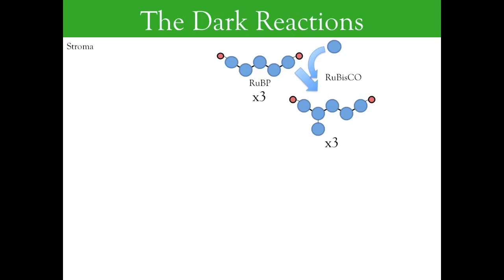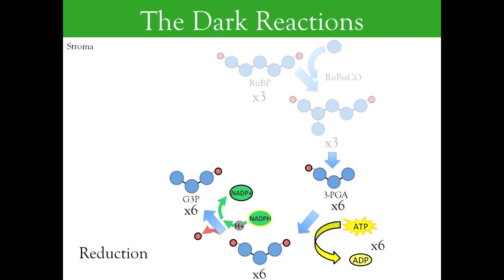Now, using the power of the ATP and NADPH from the light reactions, these three six-carbon molecules are reduced in a series of steps until they finally produce six new three-carbon molecules called G3P. Of these six G3P molecules, one leaves the reactions to be used as sugar.